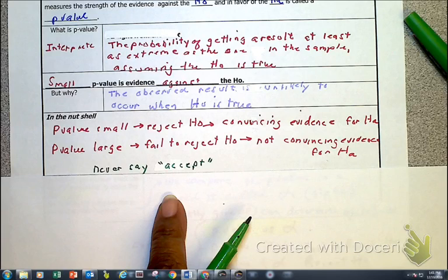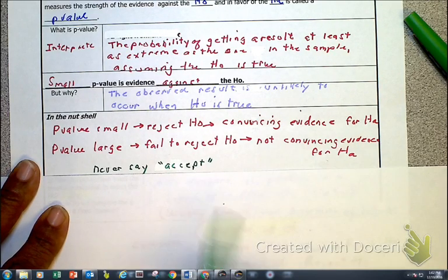Because, as we mentioned in class, the idea of a jury system, they weren't found innocent. The evidence could not support their guilt. So they will either say guilty or not guilty. And this double talk, fail to reject, is the same idea.